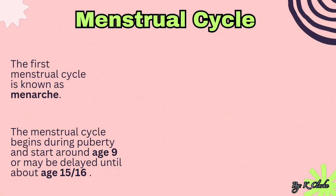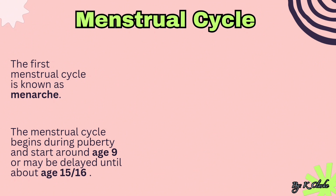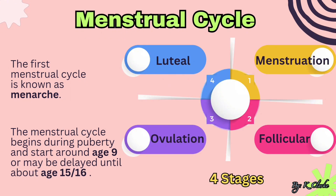If your answer is adolescence, you are correct — good job! The menstrual cycle also has stages. It consists of four stages: one, menstruation; two, follicular; three, ovulation; and four, luteal. Now it's time to learn and watch what happens at each stage of the menstrual cycle.